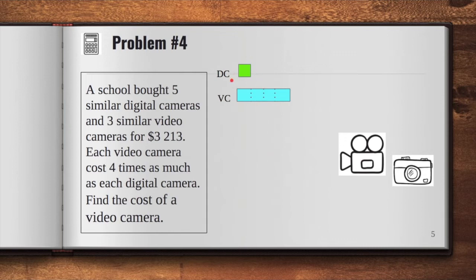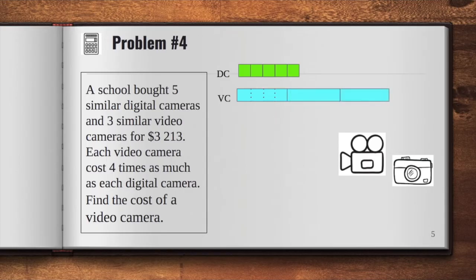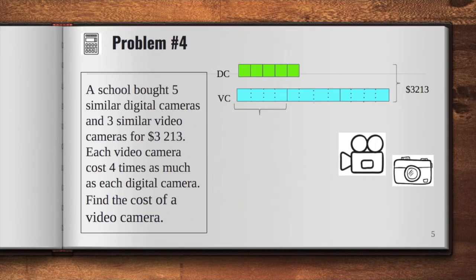So we can divide this long bar into four equal units. Now let's complete the model. Remember, there were five similar digital cameras that have been bought. So now we have five units for digital camera. What about for video cameras? How many were bought? There were three. So if I divide one unit into four equal units, I should also do the same thing here. In this way, it is easier for us to get the value of one unit. Let's complete the model. So all the items were purchased for $3,213. And our problem is to find the cost of one video camera.